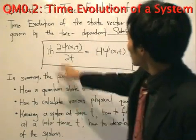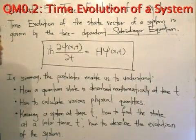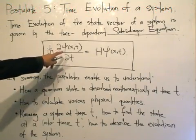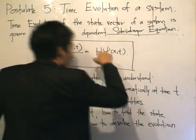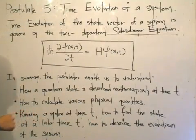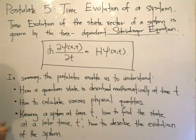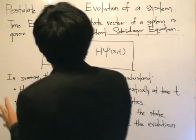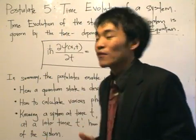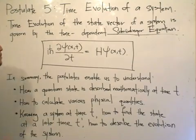iℏ times the time partial derivative of the state vector ψ equals the Hamiltonian applied to the state vector ψ. This is the time-dependent Schrödinger equation which governs the time evolution of the state of the system. Postulate number 5: time evolution of a system.